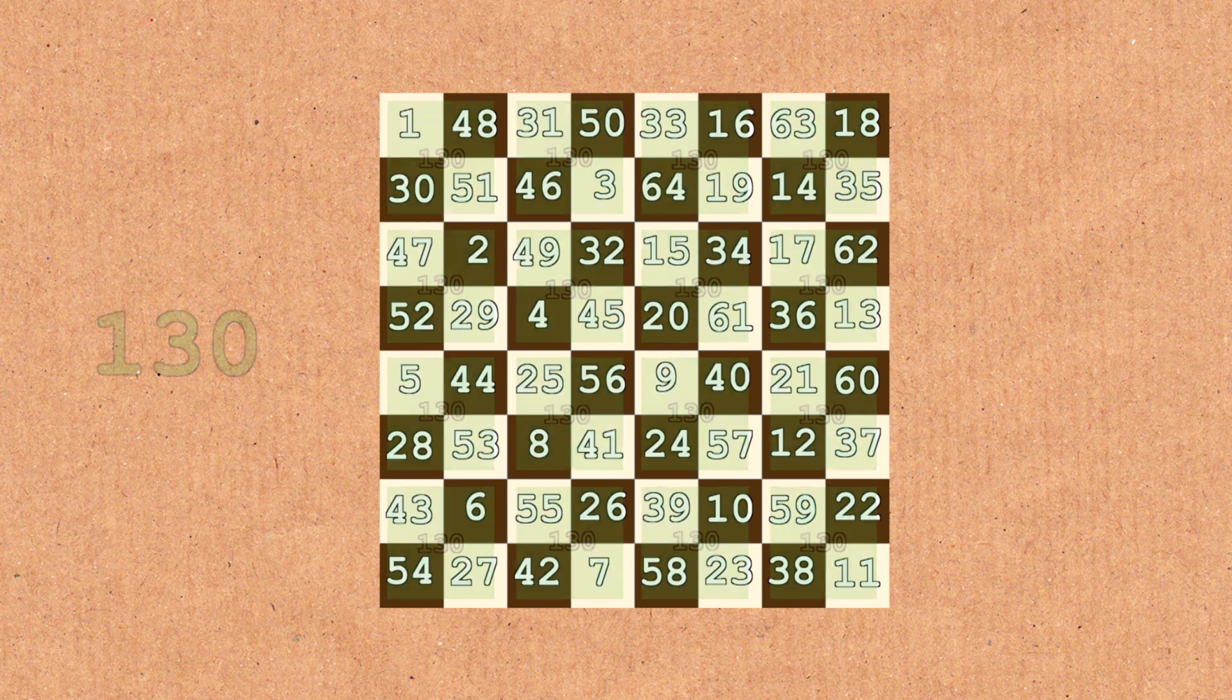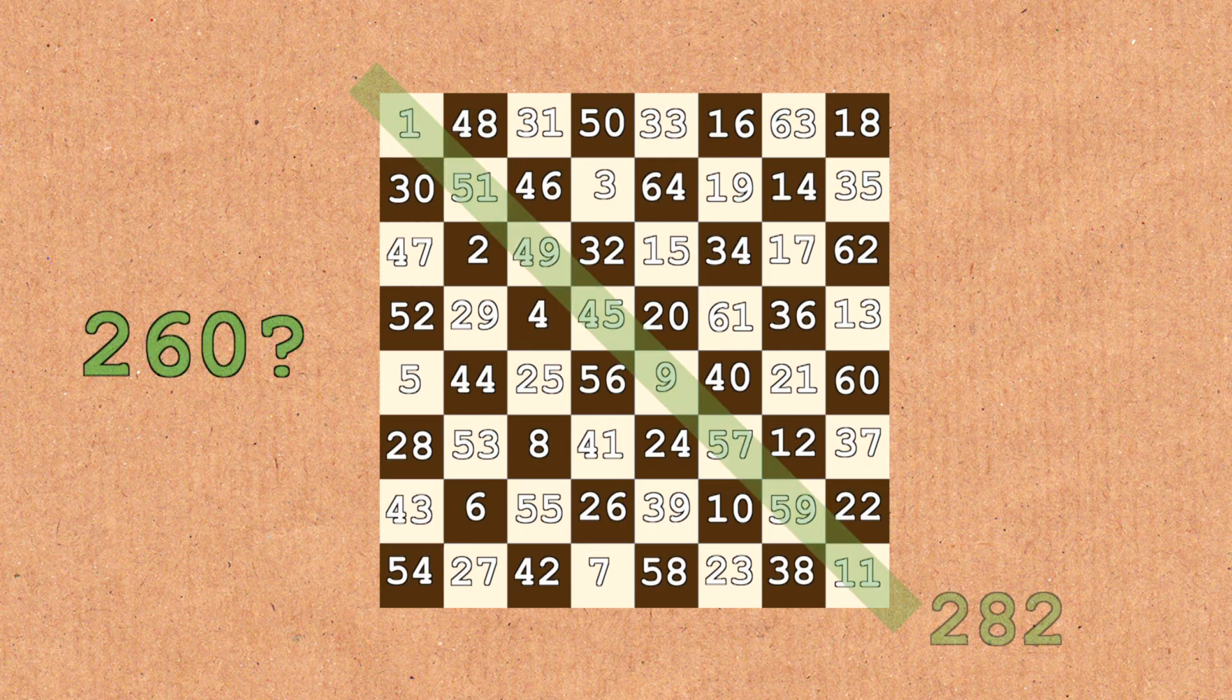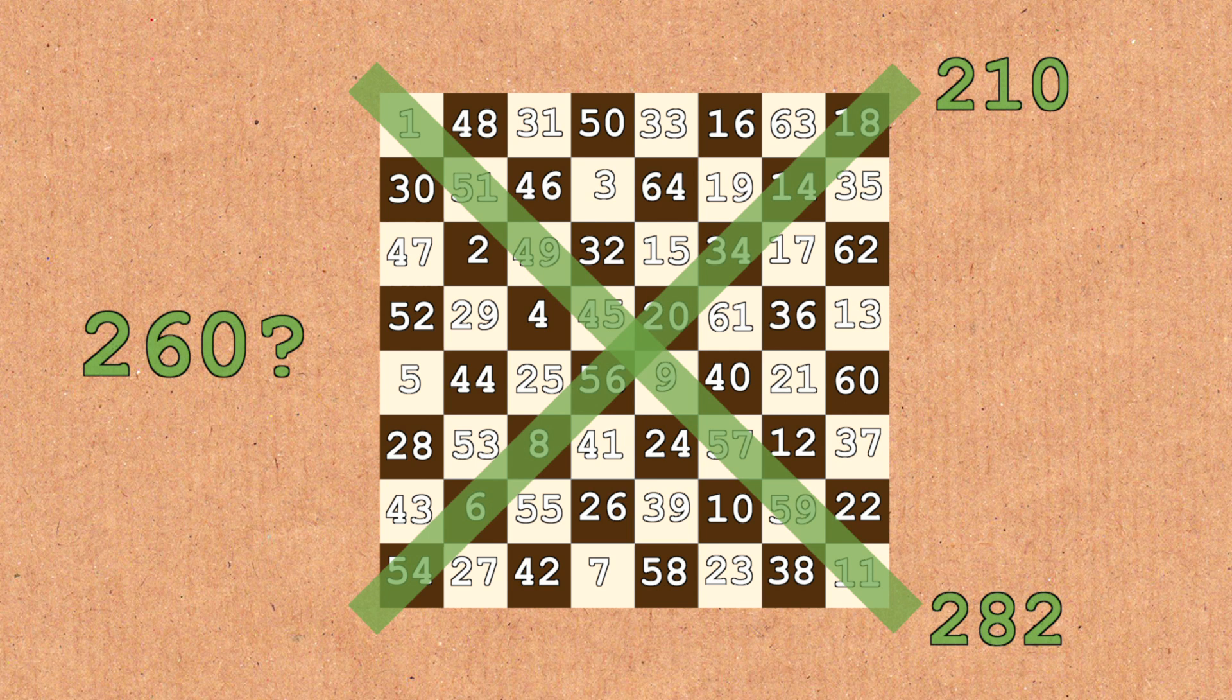But alas, this is not a truly magical square, because the diagonals do not add up to the required 260. This square is what we call semi-magical. So for a long time this was a bit of a mystery.